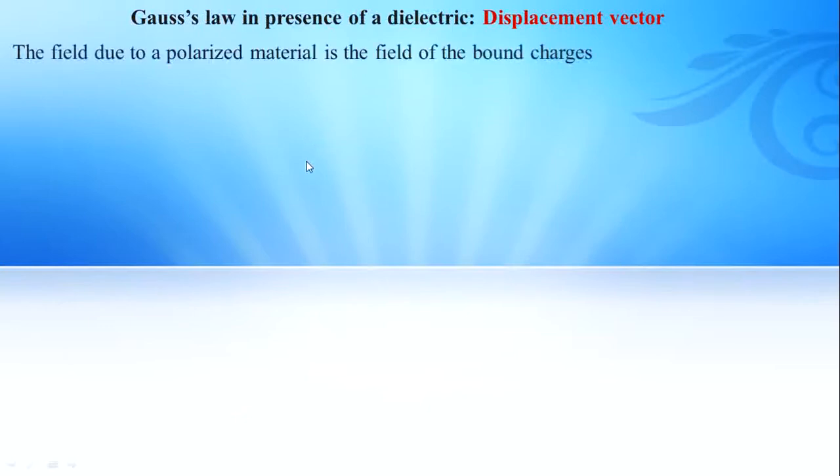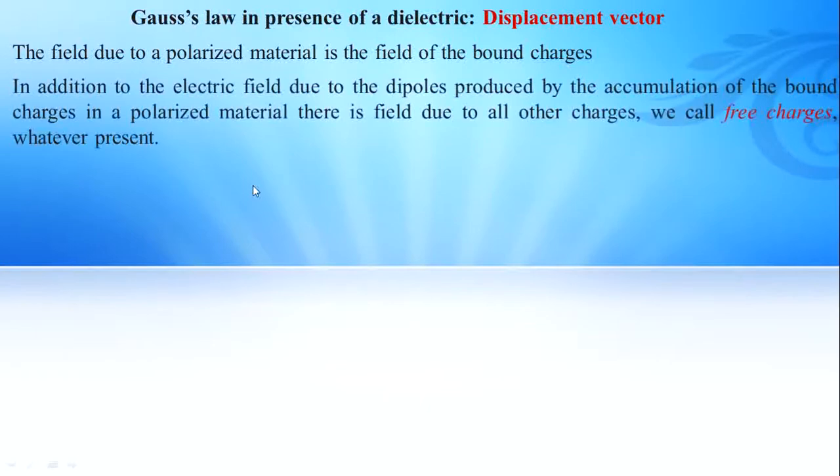The field due to a polarized material is the field of the bound charges. In addition to the electric field due to the dipoles produced by the accumulation of bound charges in a polarized material, there is field due to all other charges. We call these free charges, whatever is present.